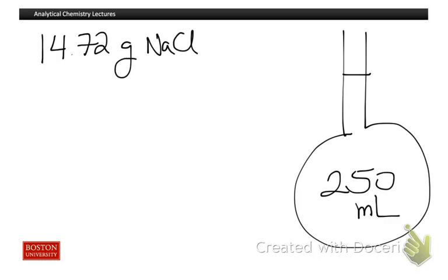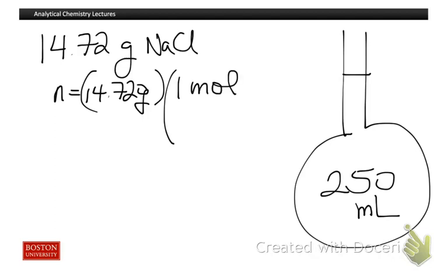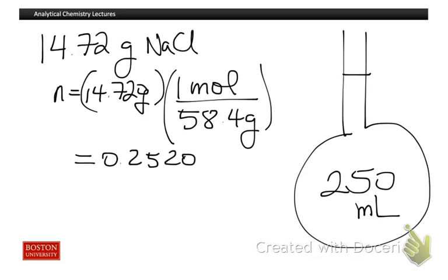Using the molar mass of sodium chloride, we can get the number of moles of sodium chloride. So the number of moles of sodium chloride is 14.72 grams, and we know that one mole of sodium chloride is 58.4 grams of sodium chloride. So we have a total of 0.25205 moles of sodium chloride.